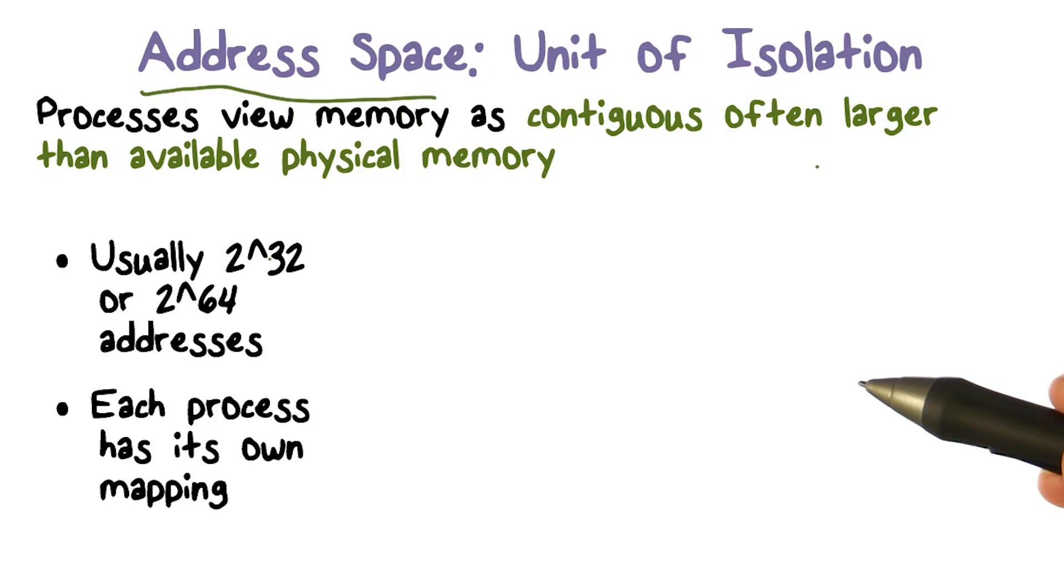We said that address space is a container for anything that has to be stored in memory for a process. A process has to fetch instruction data, so that information has to be in memory before it can execute it. So we have to prepare an address space for a process before it starts execution. And we tell the process, here is an address space for you. You can address the location zero through something. And you decide to put your data and code in these locations.